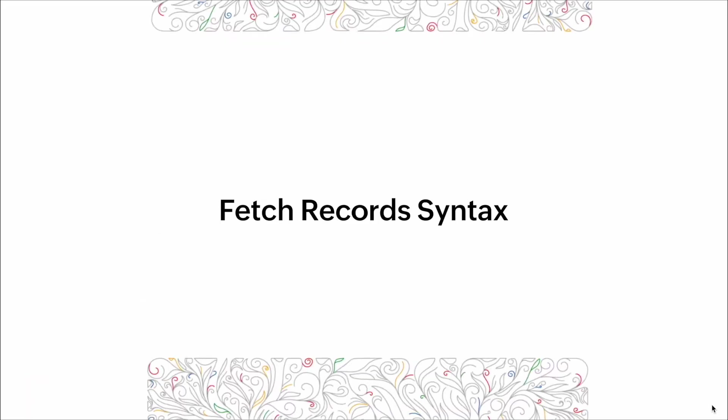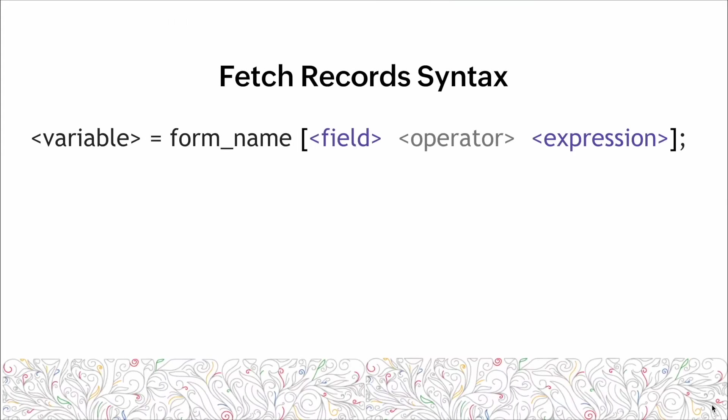The fetch record syntax. The fetch record syntax looks like this: we have the collection variable on the left side, an equal sign, then the form name which we're going to fetch records from, and then we have the criteria.